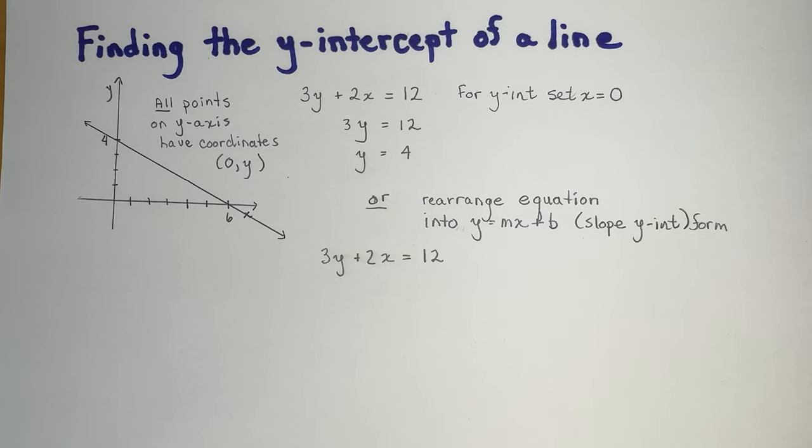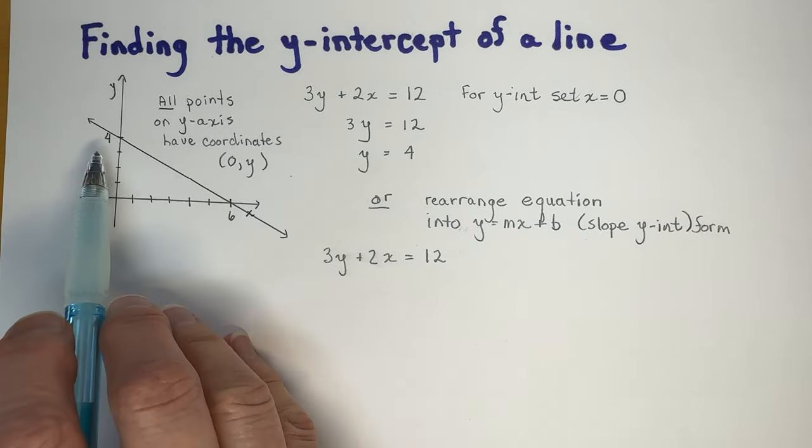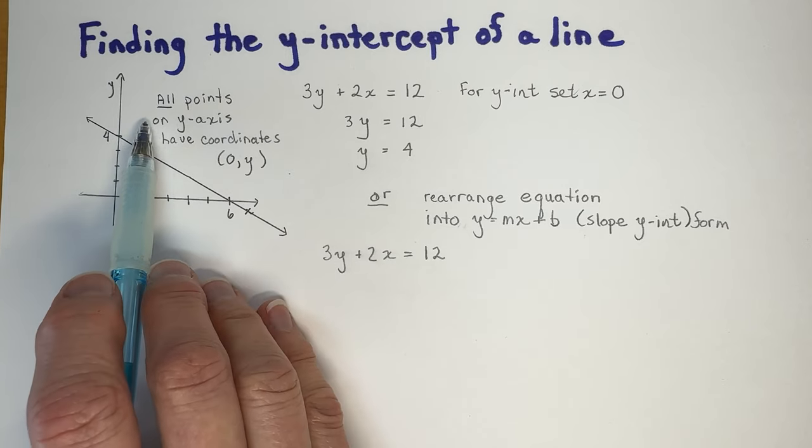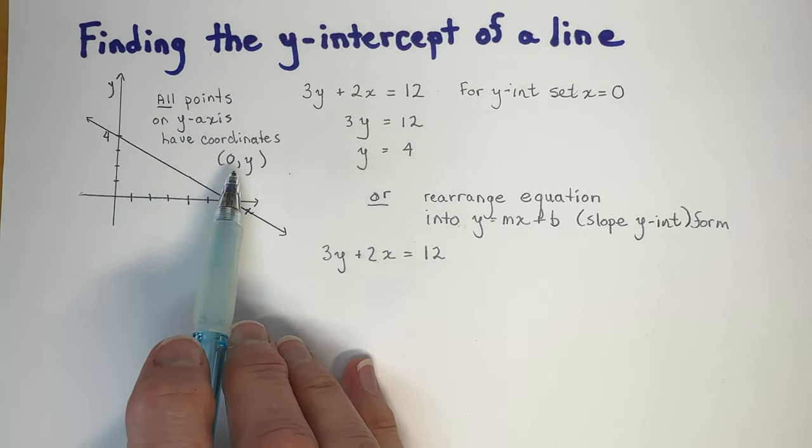If you want to find the y-intercept of a line, you can always just look at the graph, if you have one. Remember that all points on the y-axis have coordinates (0, y).